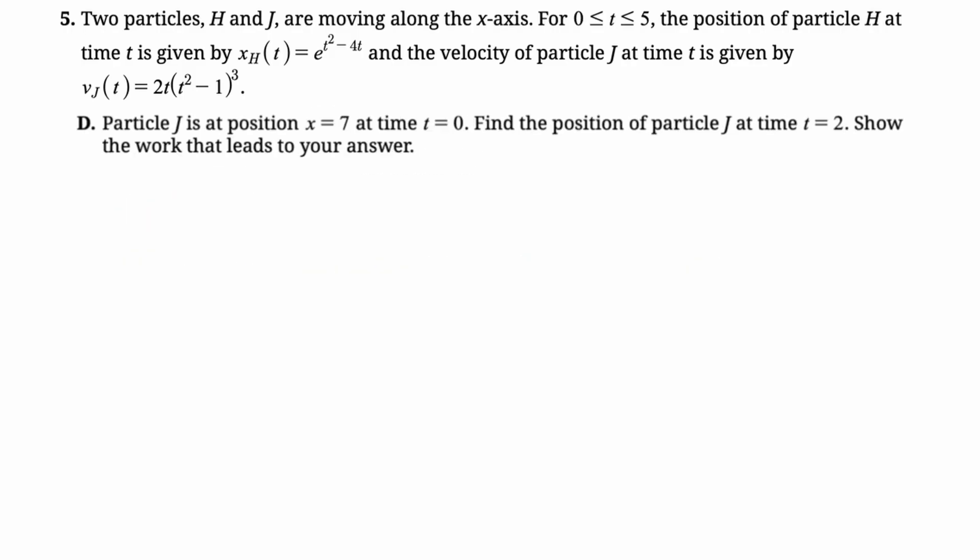Let's move on and look at part D. So particle J is at position 7 at time t equals 0. Find the position of particle J at time t equals 2. Show the work. This is my favorite thing to do with the fundamental theorem. You kind of rearrange it. It would be the integral of velocity from 0 to 2 is the position at 2 minus the position at 0. Rearrange it, and we get that the position at 2 is the position at 0 plus the integral from 0 to 2 of v_J(t). So now we just need to do that. So they gave us 7. We're going 0 to 2. And then sub in what we actually have here.